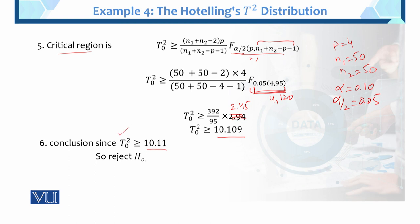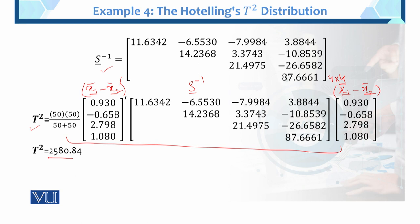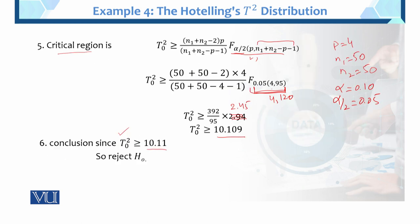What was the calculated value? Previously we gave calculated value 2580, which is greater than the table value. So what is the conclusion? If the calculated value is greater than the table value, we reject H0 at 10 percent level of significance. So this is the example of the Hotelling's T-square for two samples.